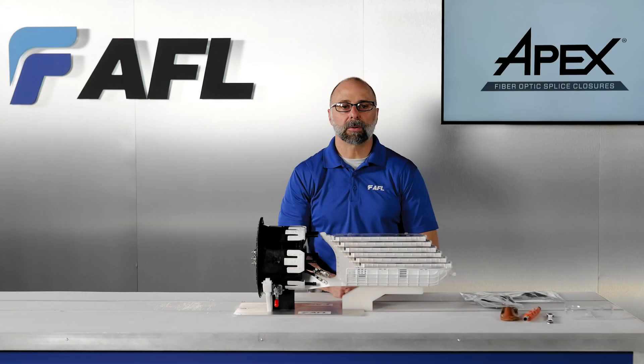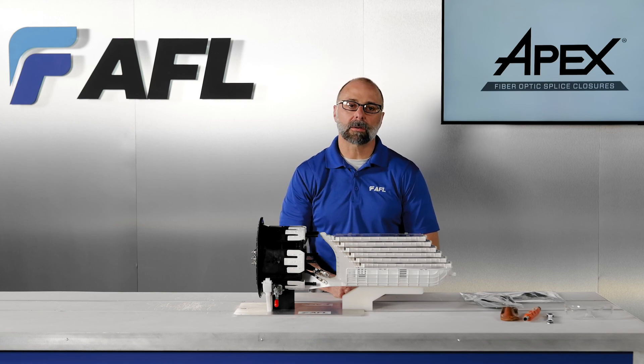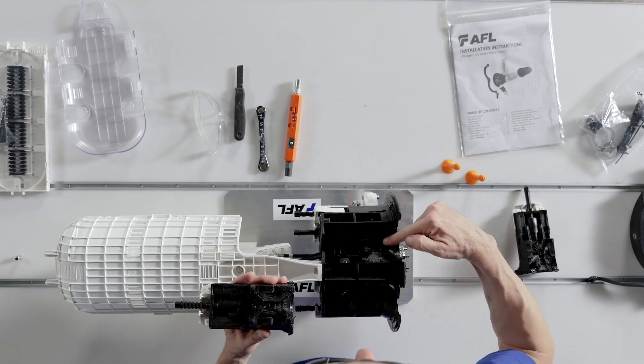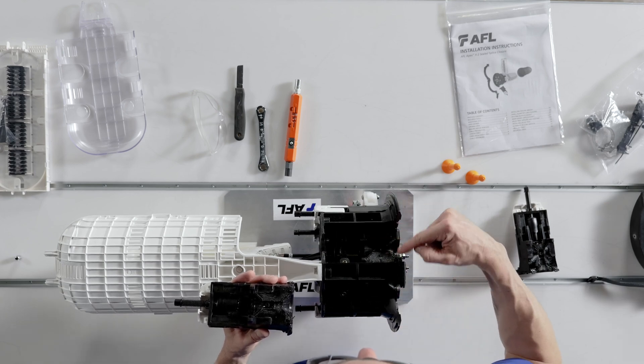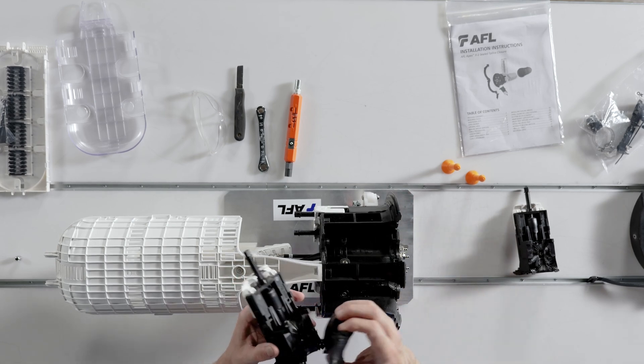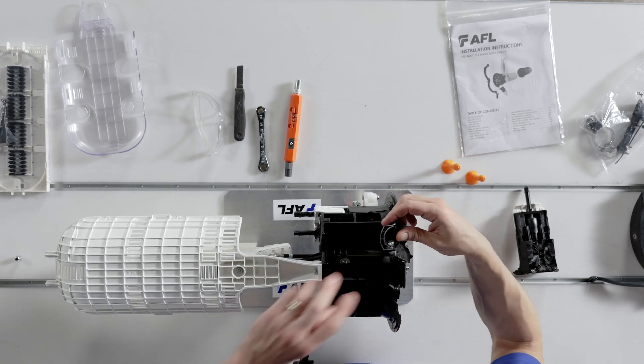The orange port plug is only needed if no cable will be installed in an apex cable port. The inner gel is retained in the base by a plastic ridge which engages with a slot in the base. If the gel blocks come out together when opening sealing wedge, simply pull them apart and reinstall.